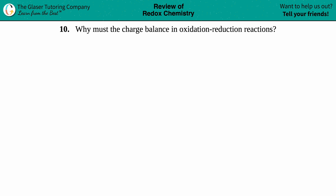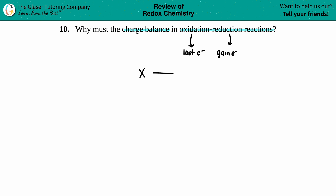Number 10: why must the charge balance in oxidation-reduction reactions? In oxidation-reduction reactions, you have two half-reactions — one is oxidation and one is reduction. Oxidation means that you lost electrons. On the flip side, reduction is a gain of electrons, and whatever you lost is always going to be gained by the other substance.